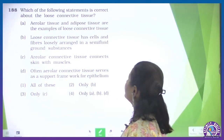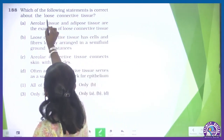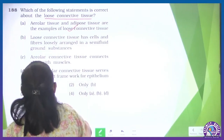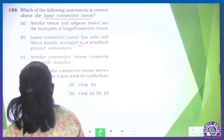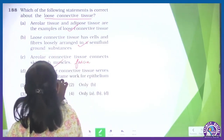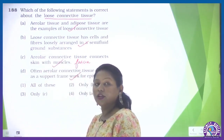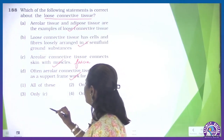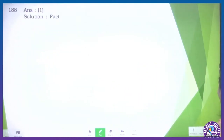Question 188: which of the following statements is correct about loose connective tissue? Areolar tissue and adipose tissue are examples of loose connective tissue — correct. Loose connective tissue has cells and fibers loosely arranged in a semi-fluid ground substance — correct. Areolar connective tissue connects skin with muscle — also correct. Areolar connective tissue serves as a support framework for epithelium — yes, the connective tissue beneath epithelium is also areolar connective tissue — true. So our correct option will be all of these — the first option is correct for question 188.